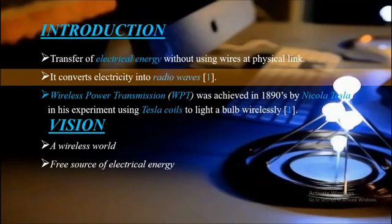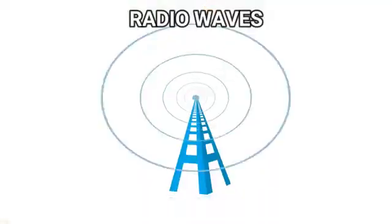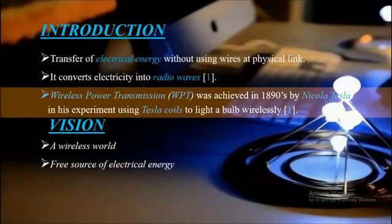Now a question arises: what are radio waves? A wave having a frequency ranging from 30 Hz to 300 GHz is said to be a radio wave. These waves have the tendency to carry power from one point to another. The idea of wireless power transmission was given and achieved in the 1890s by Nikola Tesla. He is the father of electricity, and he successfully lit a bulb without connecting wires at a physical distance using Tesla coils.